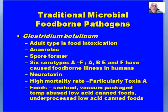Foods associated with C. botulinum — and this is a preformed toxin found in the product prior to consumption — include vacuum packaged temperature-abused seafood, low-acid canned foods that were under-processed. We don't see a lot of cases of C. botulinum in commercially processed foods because of regulations related to low-acid canned food processing. One area where we have seen potential outbreaks is with type E in vacuum-packaged temperature-abused seafood products, especially smoked products, and improperly brined fish with internal organs still present.